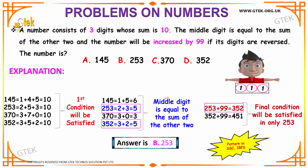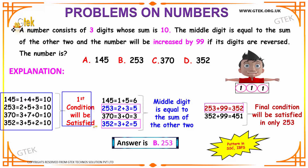From our options, 145 can be written as 1+4+5 = 10. 253 is 2+5+3 = 10. 370 is 3+7+0 = 10. And 352 is 3+5+2 = 10. Hence, all four options satisfy the first condition that the sum of digits should be 10.